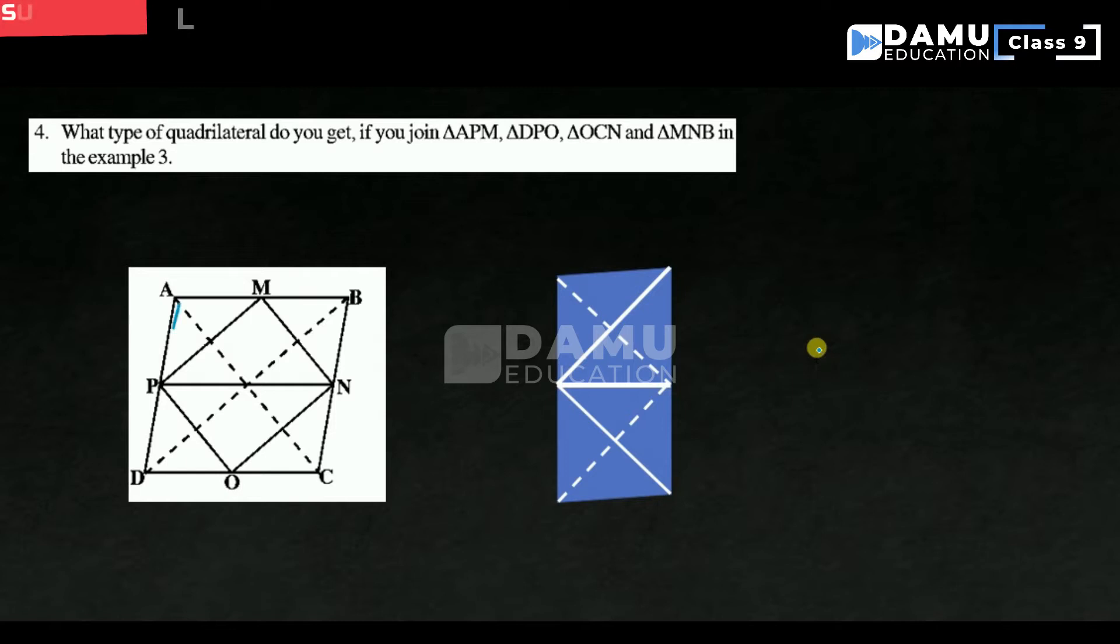So here, let's shade all these shapes. This is one triangle APM. Let's shade another triangle. This is another triangle. Then what is the other triangle here? This is one more triangle, that is OCN, and another triangle is here.